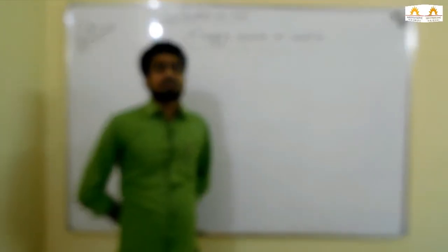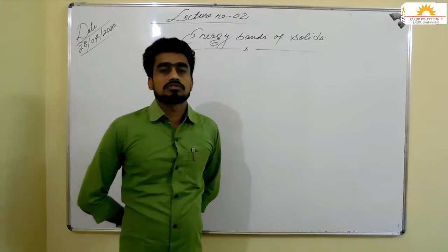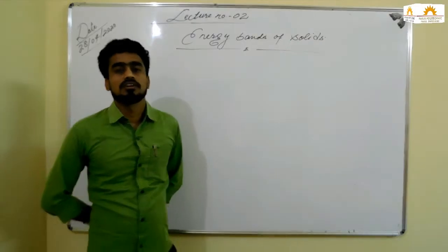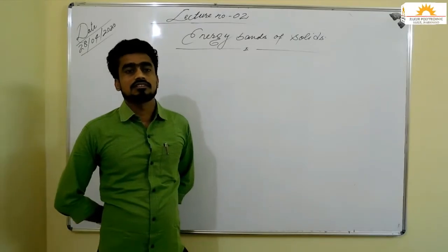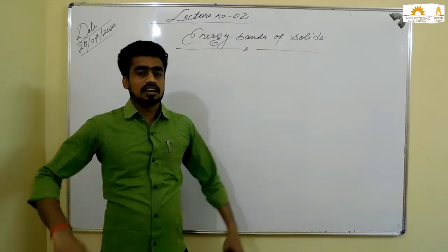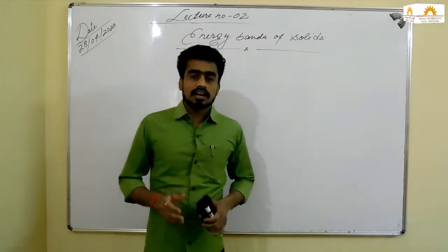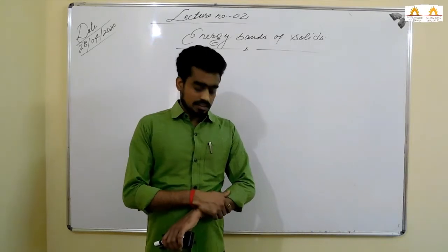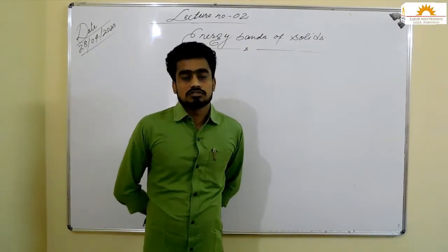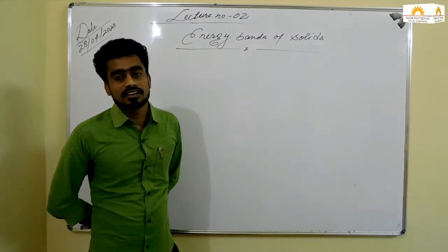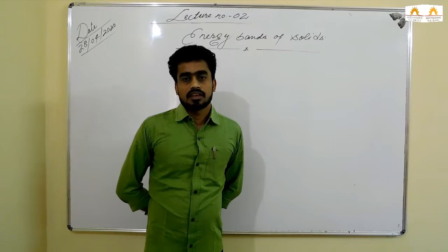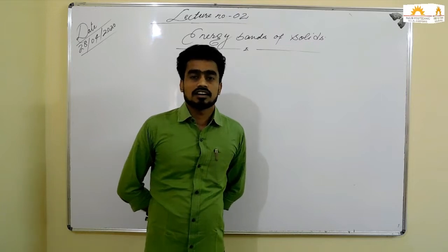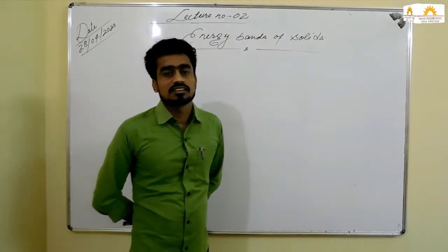According to Bohr's atomic model, I am talking about the isolated atom — that is, a single atom. In a single atom, Bohr gave the idea that electrons have a definite and discrete amount of energy, and this energy corresponds to different shells and sub-shells.